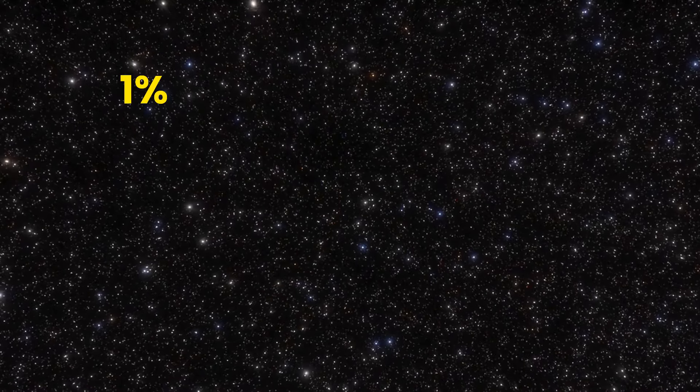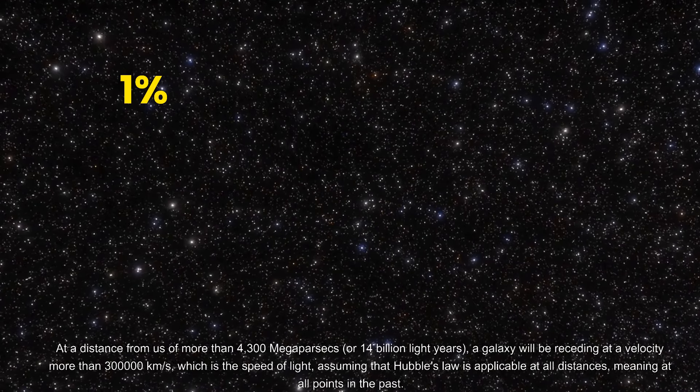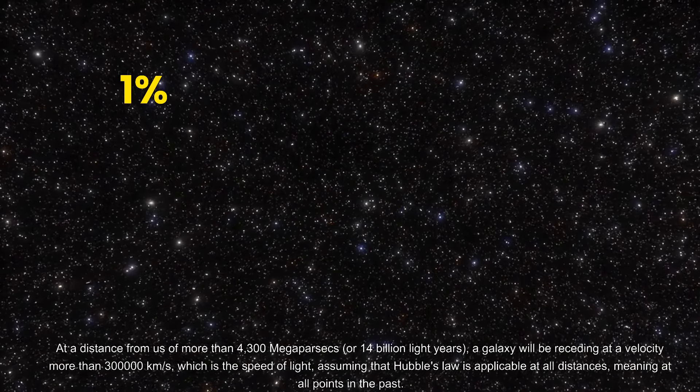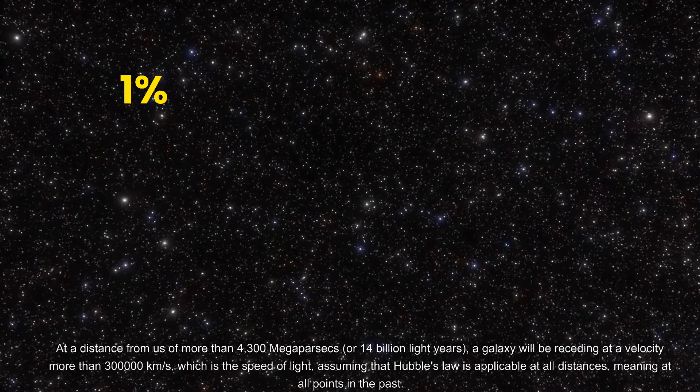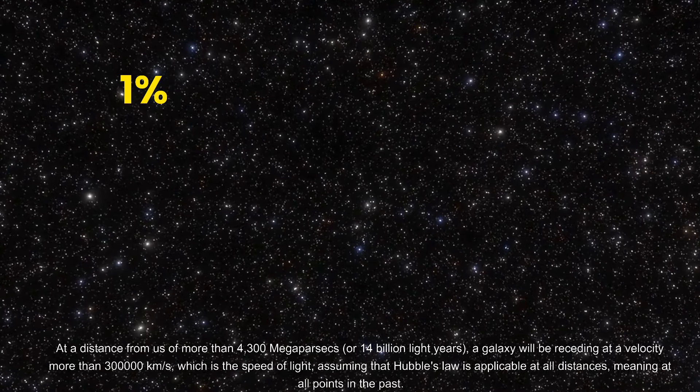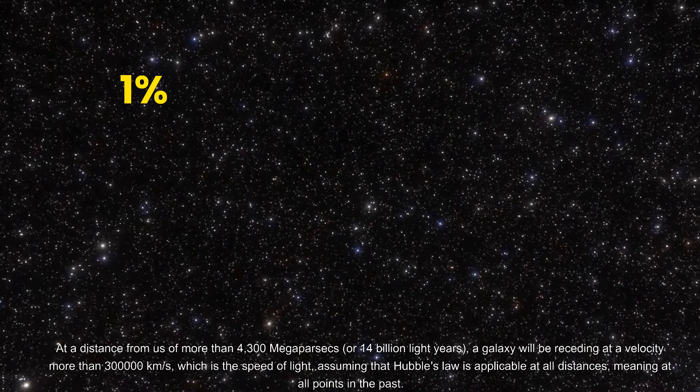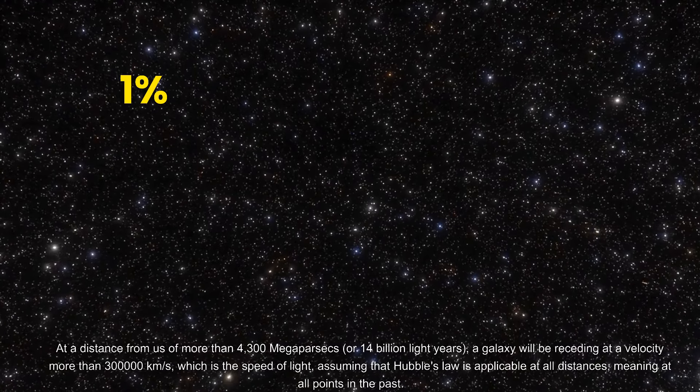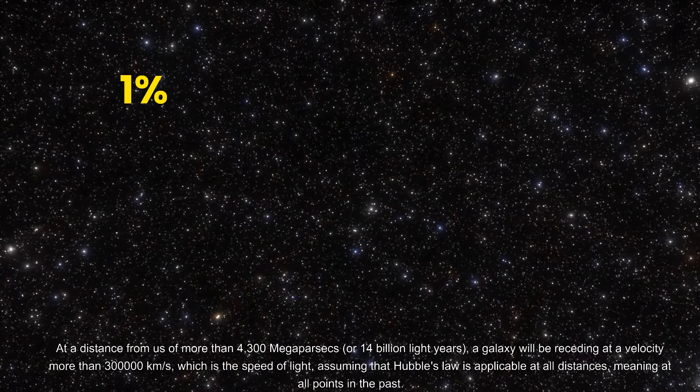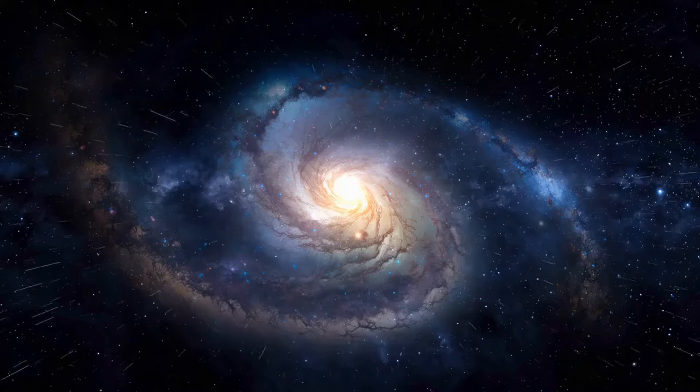At a distance from us of more than 4,300 megaparsecs or 14 billion light years, a galaxy will be receding at a velocity more than 300,000 kilometers per second, which is the speed of light. Assuming that Hubble's law is applicable at all distances—meaning at all points in the past—any light it released today would not be able to reach us in that circumstance.